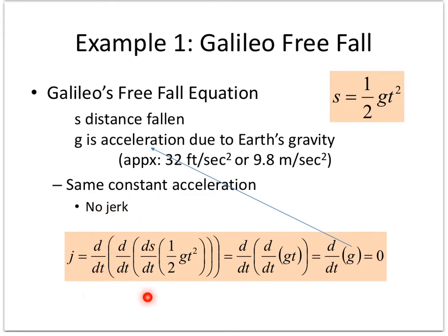Let's see that: first derivative — bring the 2 down, the constant term goes away, that becomes gt. Second derivative — the derivative of gt is just g. Third derivative — the derivative of a constant is zero. So that's a big hint for a test question: if I said 'prove this function has no jerk,' you would have to show the third derivative equals zero.